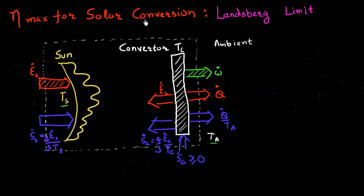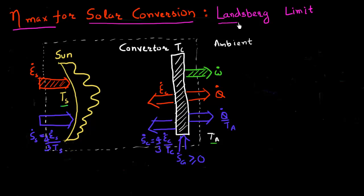Let me pick up where we left off in the last video. I'm interested in deriving this maximum efficiency limit for solar energy conversion. This is sometimes also known as the Landsberg limit.